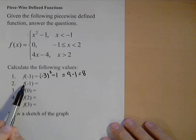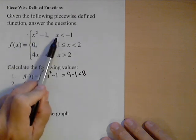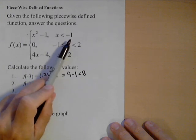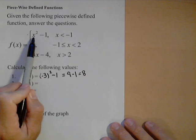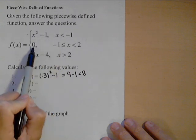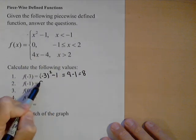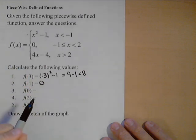Now, let's see what happens at f of negative one. Notice it's x squared minus one for x strictly less than negative one, so it doesn't include negative one, so we do not want to use this piece. Right here, when x is greater than or equal to negative one, the function is zero. So f of negative one is just zero because we're using that middle piece.